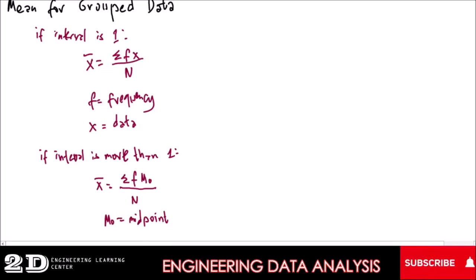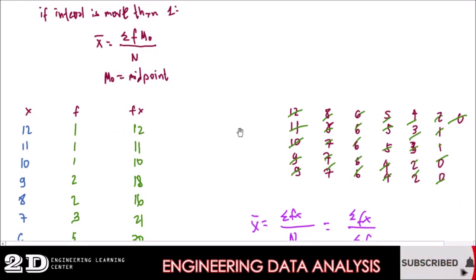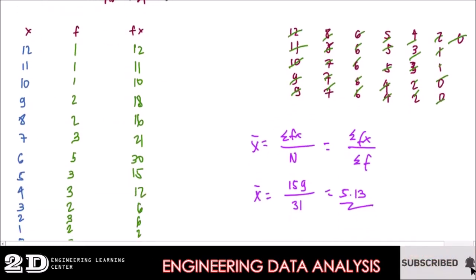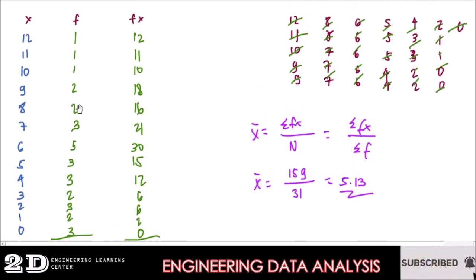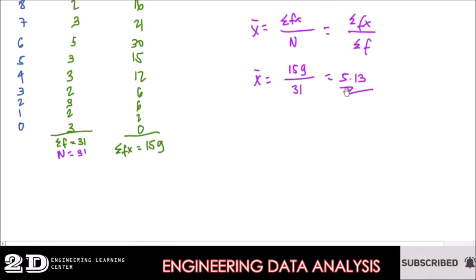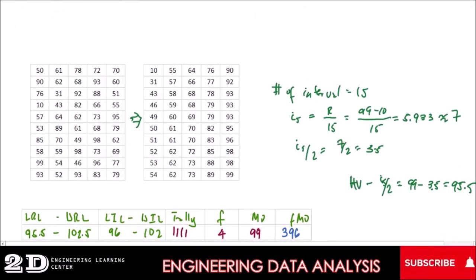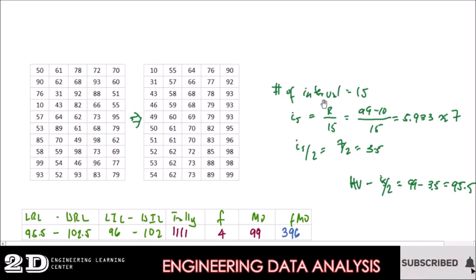The formula for grouped data depends on the interval size. If the interval is only 1, we use one formula; if the interval is more than 1, we use another. For interval equal to 1, we get the frequencies, multiply them by the data values, get the sum, then divide by the total number of data. For interval greater than 1 — for example, with 50 data points — we create a frequency distribution table with an interval size of 7, keeping the number of intervals not more than 15.